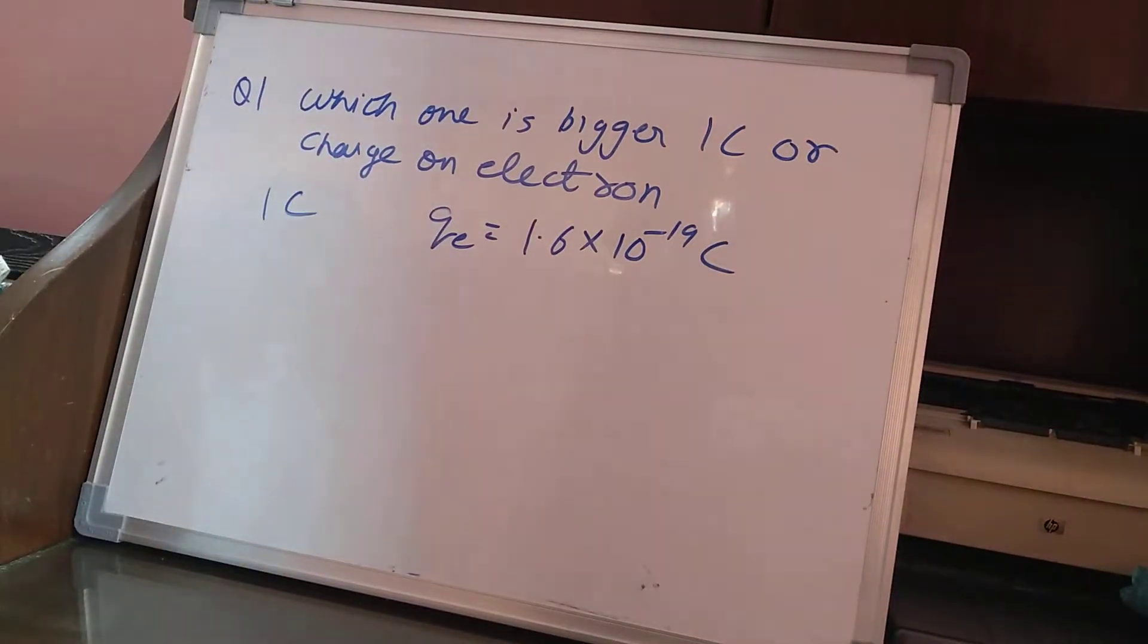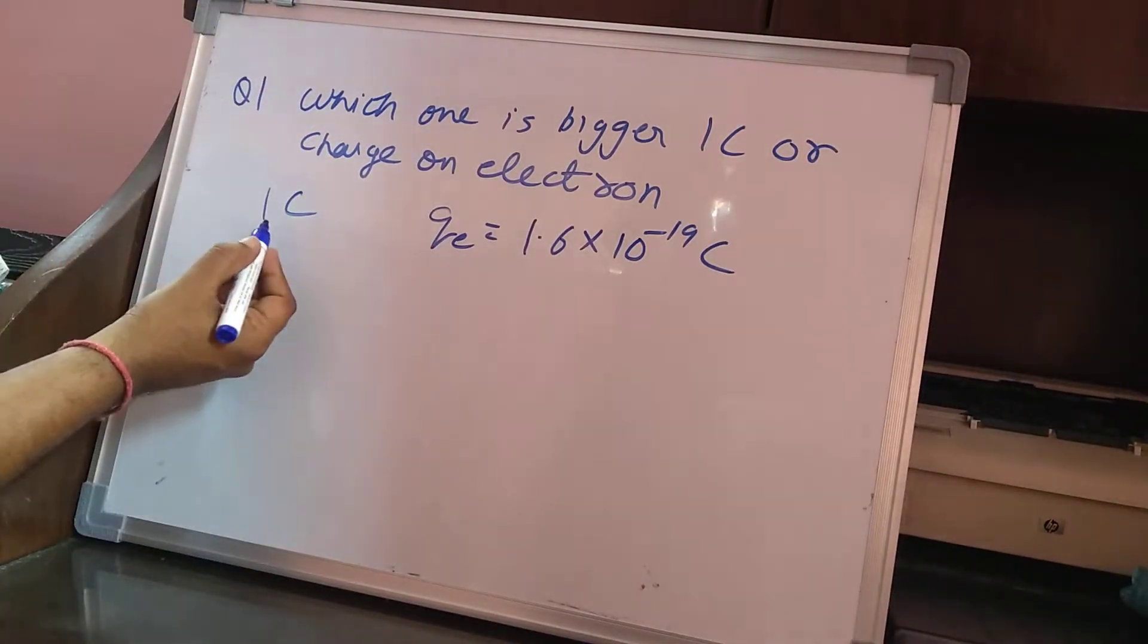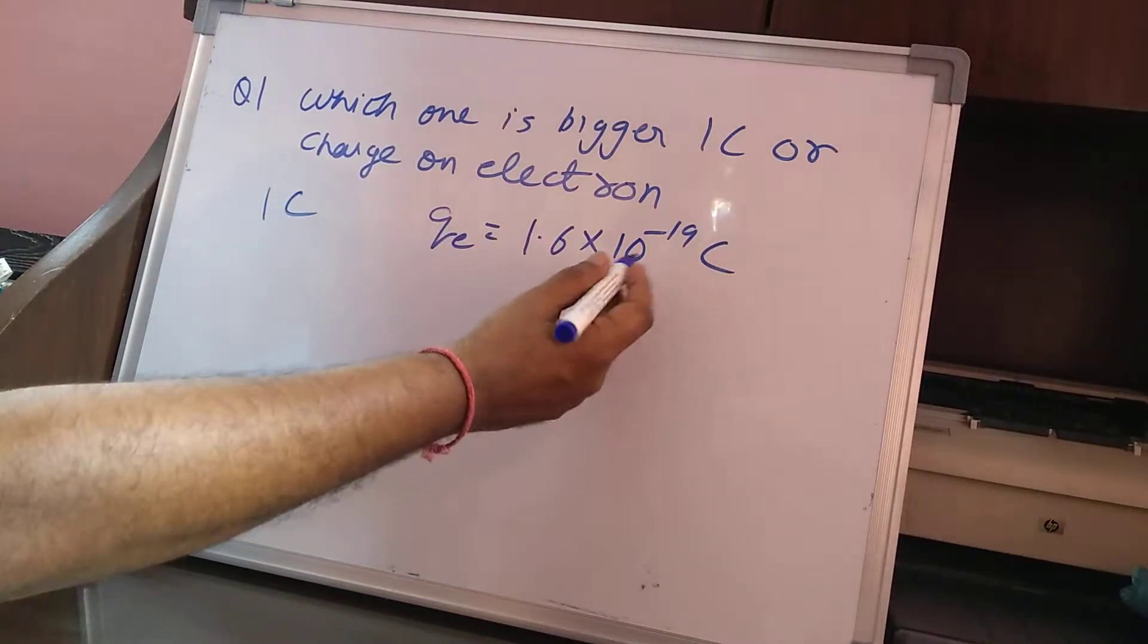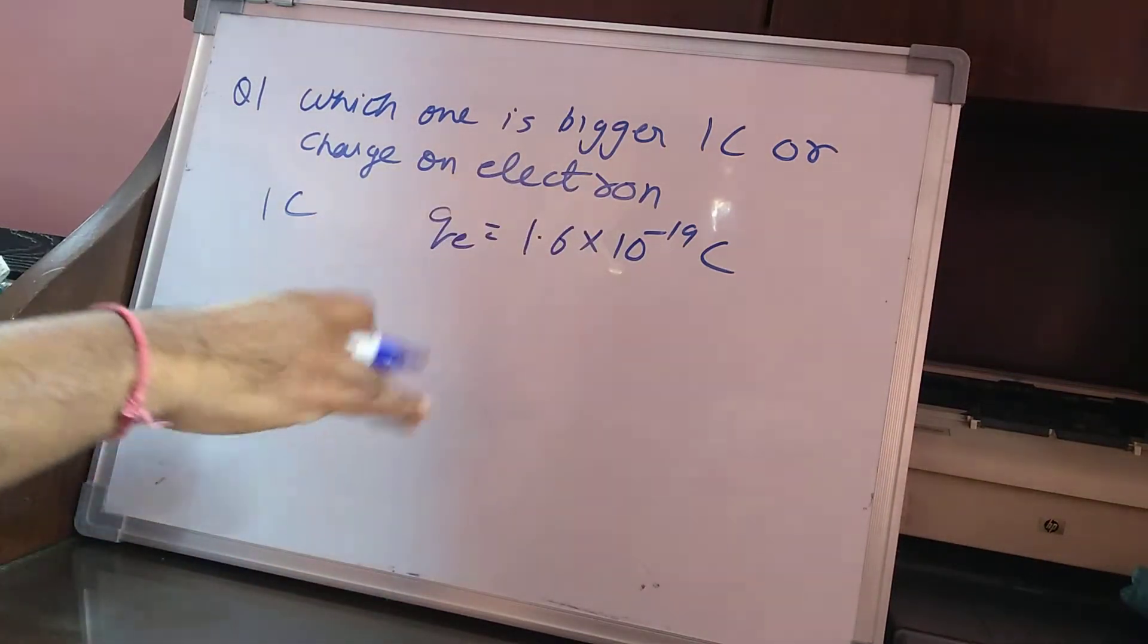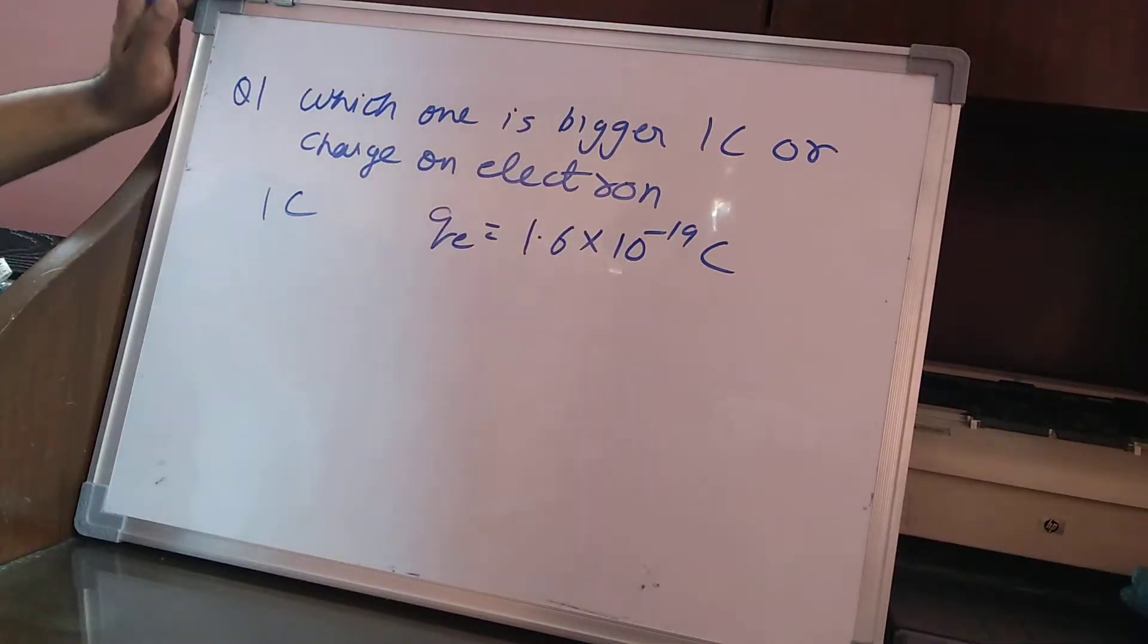So which one is bigger? Of course 1 coulomb is bigger than charge on electron. Because if you look at the charge on electron, it is 10 raised to the power of minus 19 coulomb. Look at the order. 10 raised to the power of minus 19 is very very small.